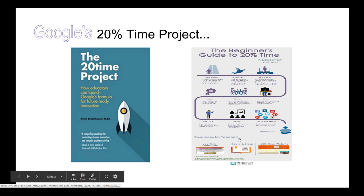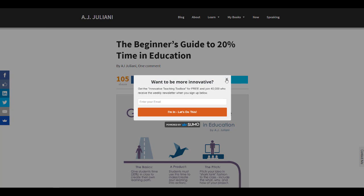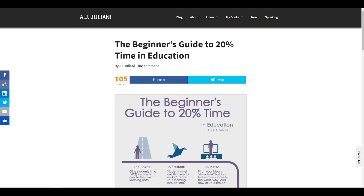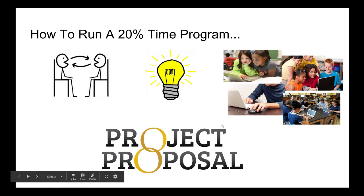So there are guidelines. Let's look at some of those. When we look at our guidelines, we are really looking at how to run a 20% time program. And when we do that, it really starts with communication.